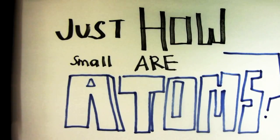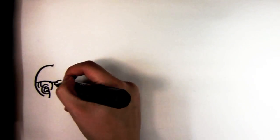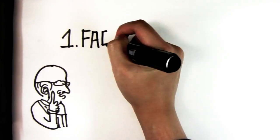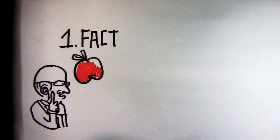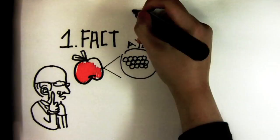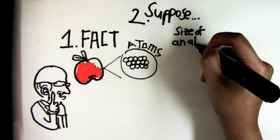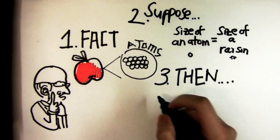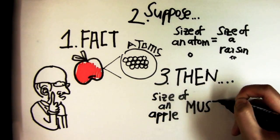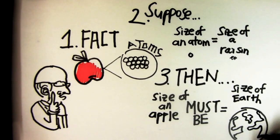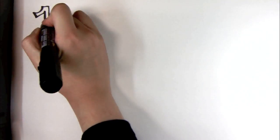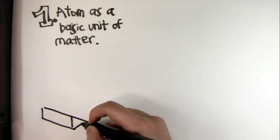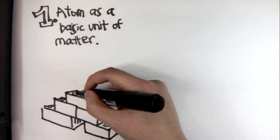So just how small are atoms? Earlier we discussed that all matter is made out of atoms, so if we look at an apple, we know that it is made out of atoms. Let us imagine that the size of just one atom from the apple is equivalent to the size of a raisin. Then the size of the apple must be equal to the size of the earth. What have we learnt so far? Atom is the basic unit of matter, just like how a Lego structure is made out of many small Lego pieces.